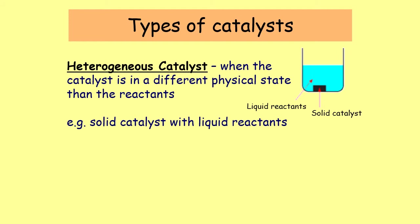Catalysts come under two categories. The first is a big word: heterogeneous. A heterogeneous catalyst is when the catalyst is in a different physical state than the reactants. Often this means the catalyst is a solid and the reactants are either gases, liquids, or in solution. As soon as you add that solid to your liquid or gas, the reaction will start to happen.